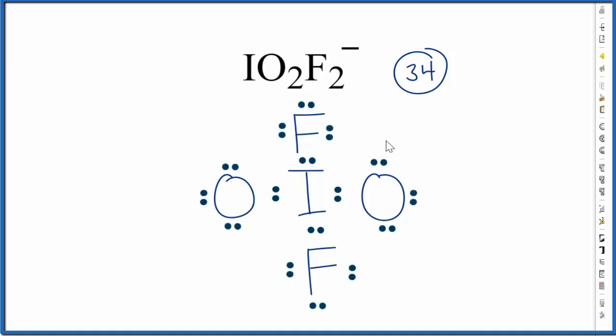Then we'll complete the octets on the oxygens and the fluorines. At this point we've used 32 valence electrons, so we still have two more valence electrons and we're just going to stick them on the iodine. Iodine is below period 3 so it can have an expanded octet, so let's just put those right here.